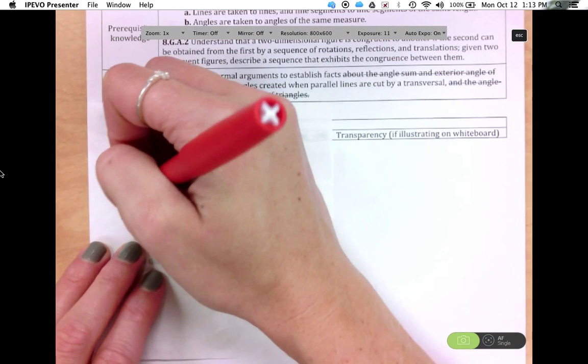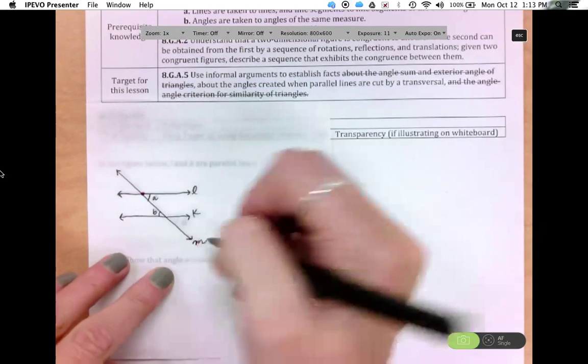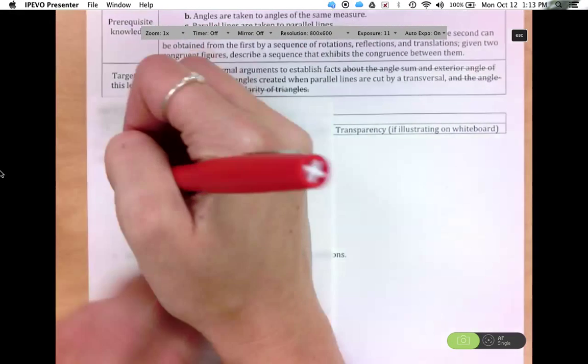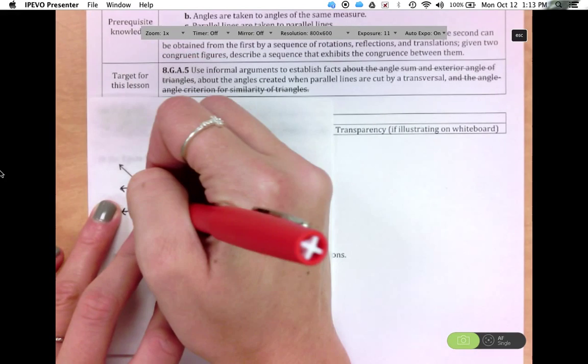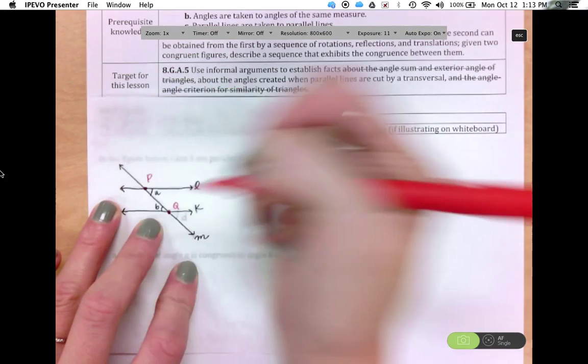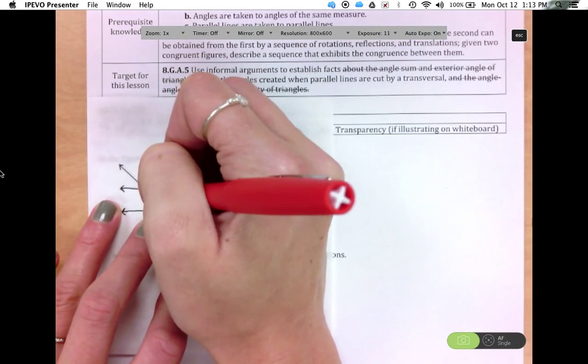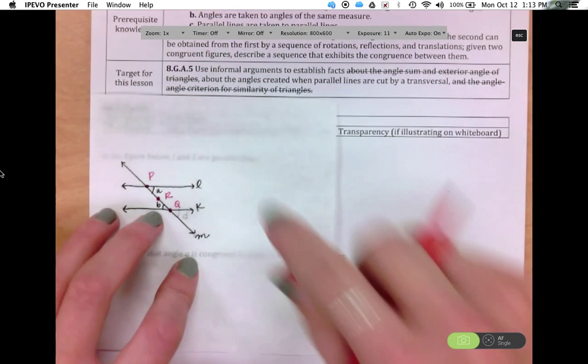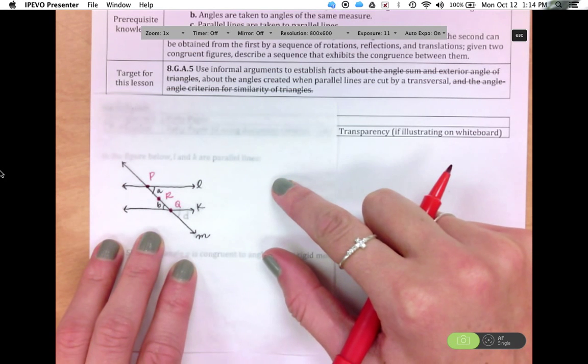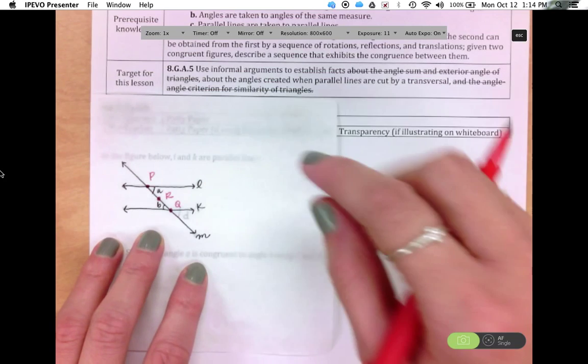So if we say that the intersection of L and M, let's call that P. And the intersection of K and M, let's call that Q. And then the midpoint of PQ, let's call that R. So now if we have these points here, and we rotate this plane 180 degrees about R.